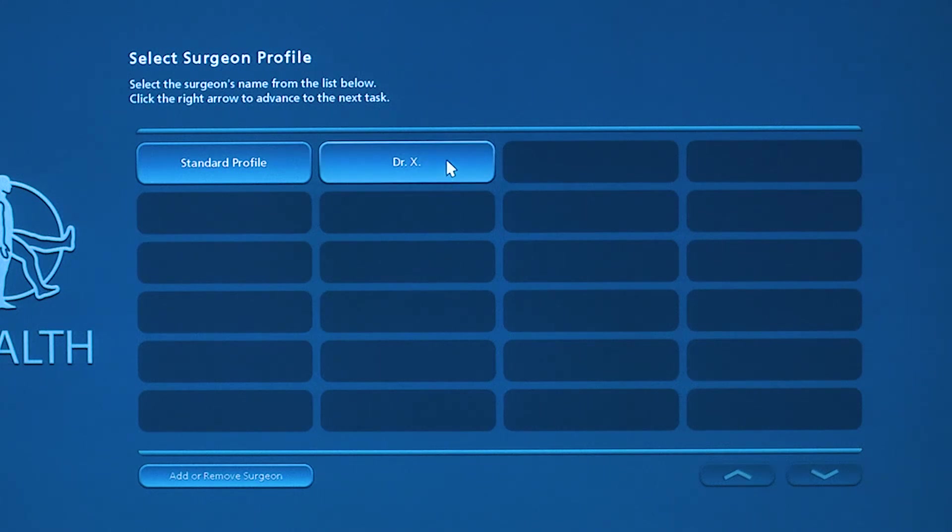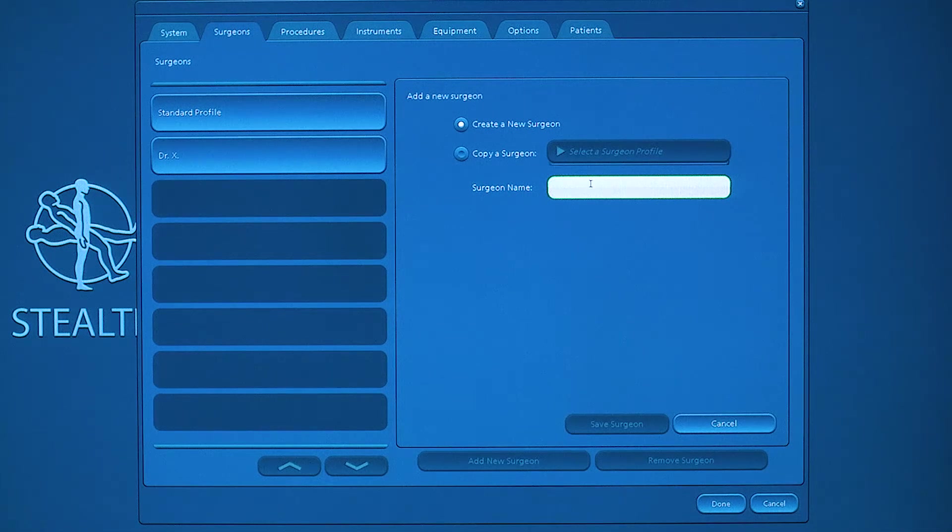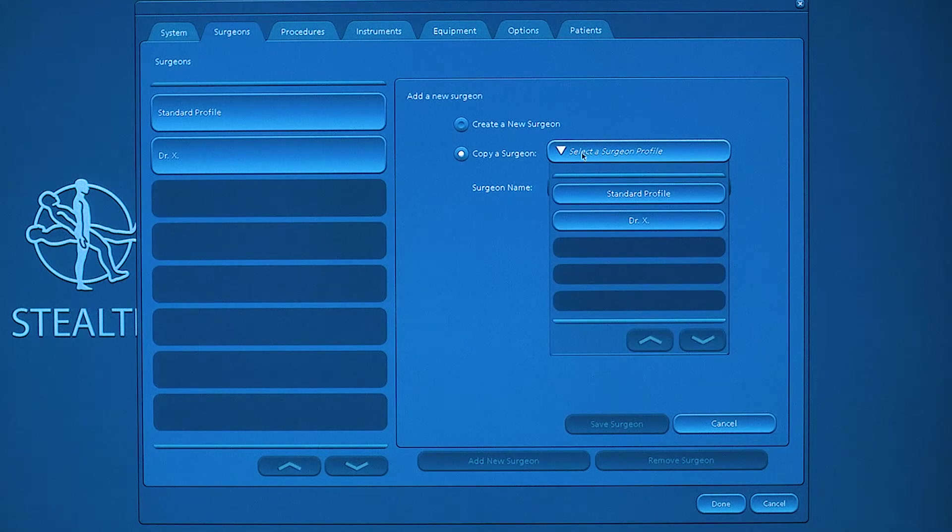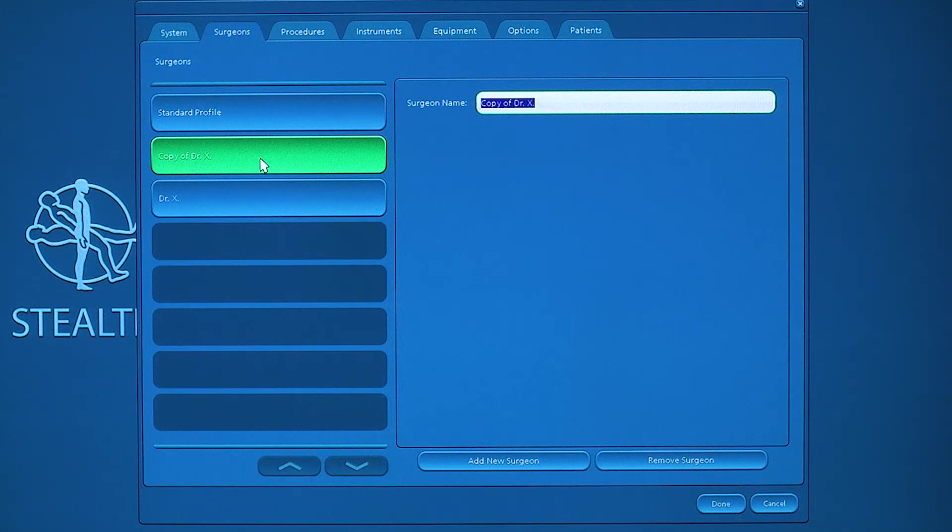Once you enter the application, you'll select the physician. You can create multiple physicians by adding or removing. Simply select add physician, add new surgeon. You can either copy a current profile or create a new one from scratch. In this instance, we'll copy Dr. X, save surgeon, and that new surgeon is added.